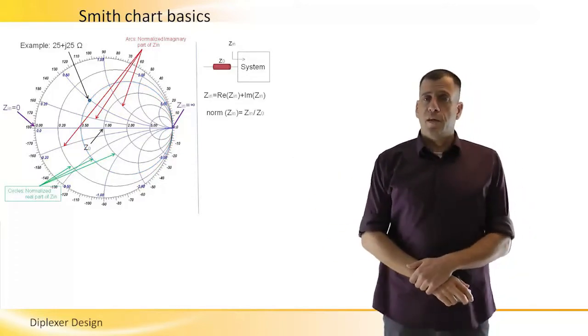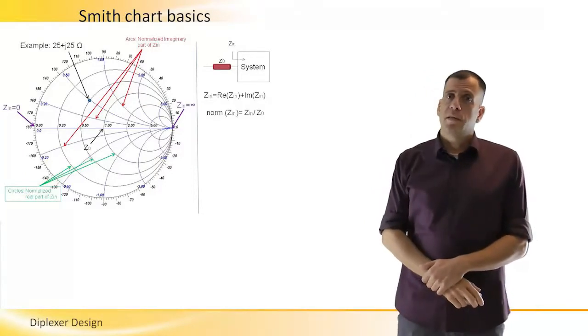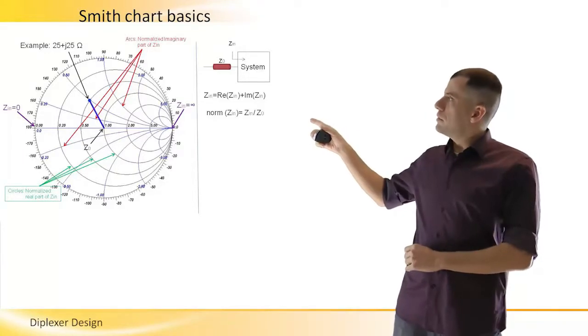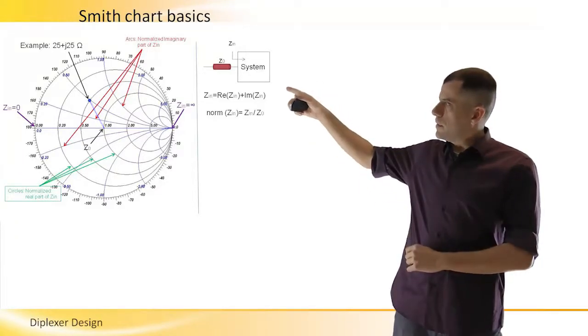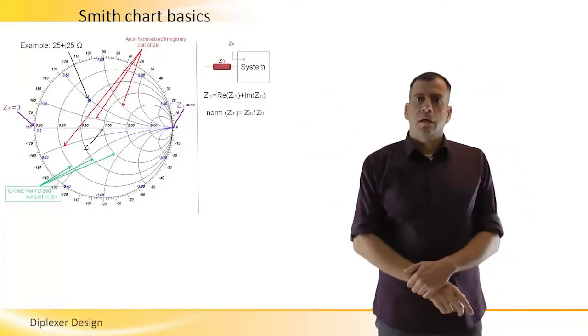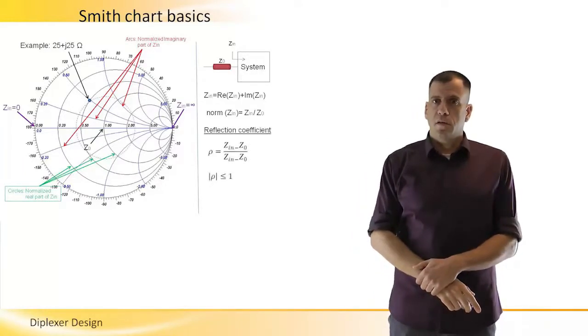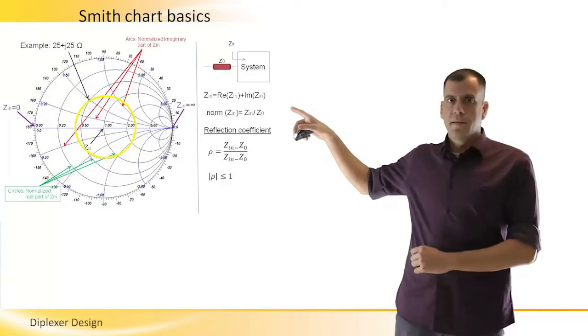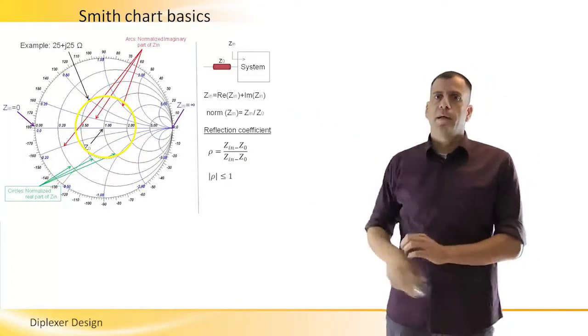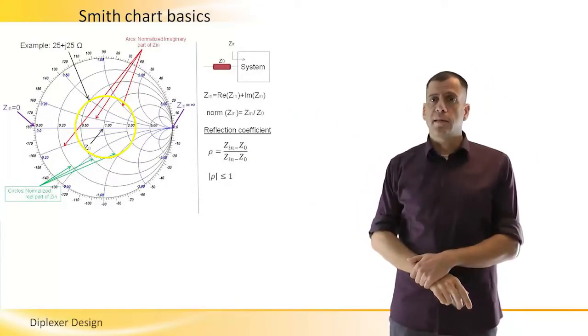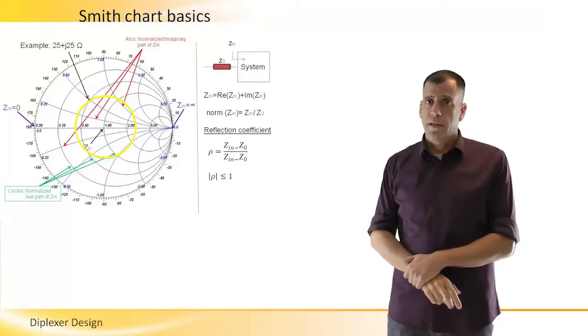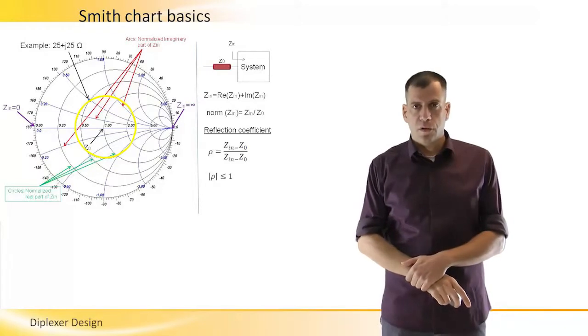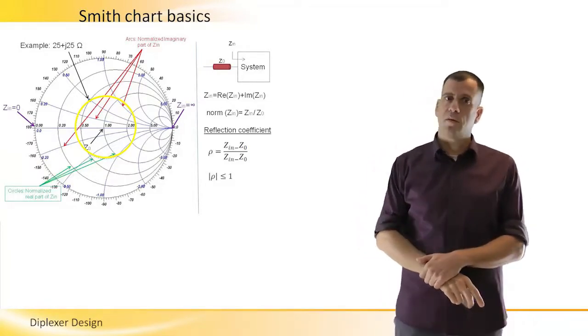The reflection coefficient is the normalized vector that starts from the center of the Smith chart to the point we have just marked. The radius of the circle whose circumference touches our impedance point and whose center is located at the center of the Smith chart is the magnitude of the reflection coefficient, used for instance to calculate return loss.